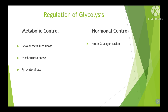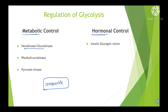Coming to the regulation of glycolysis: glycolysis is mainly regulated in two ways — metabolic control and hormonal control. Regulation is a way to control the rate of the reaction or rate of the pathway. Mainly the enzymes catalyzing the irreversible steps are the key regulatory enzymes: hexokinase or glucokinase, phosphofructokinase, and pyruvate kinase.